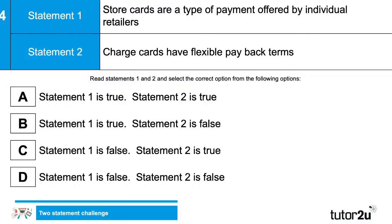One more true or false: statement one — store cards are a type of payment offered by individual retailers; statement two — charge cards have flexible payback terms. Which combination is true or false? The answer is B — statement one is true and statement two is false. A charge card doesn't have flexible payback terms; with something like Amex, you have to pay off the outstanding balance at the end of each month, so it's normally for high spenders.